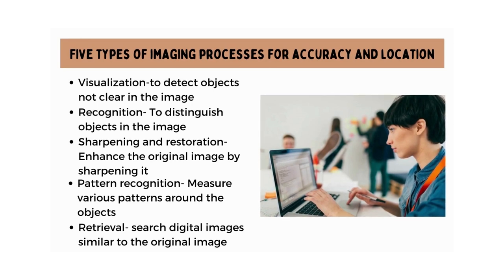Now let's understand five types of imaging processes for accuracy and location. First is visualization, to detect objects not clear in the image. Second is recognition, to distinguish objects in the image. Third is sharpening and restoration — enhance the original image by sharpening it. Fourth is pattern recognition — measure various patterns around the objects. Fifth is retrieval — search digital images similar to the original image.